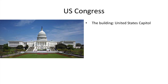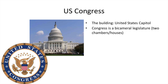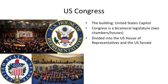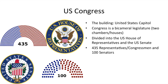The U.S. Congress meets in a building called the United States Capitol. Congress is a bicameral legislature, meaning it has two chambers or houses: the House of Representatives and the Senate. There are 435 representatives — usually just called congressmen — in the House of Representatives, and there are exactly 100 senators.